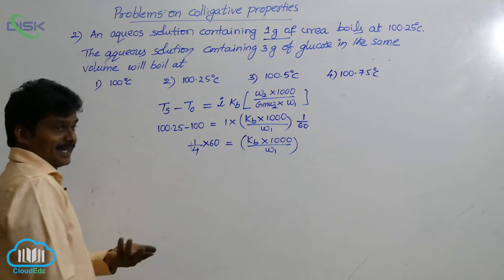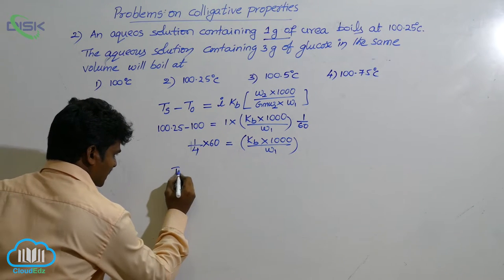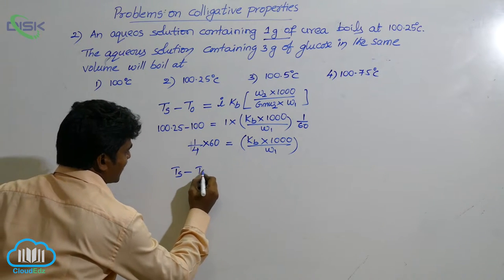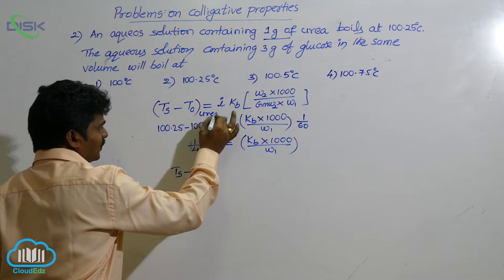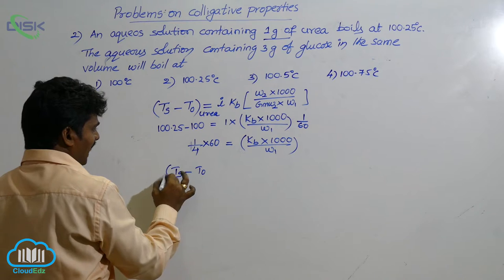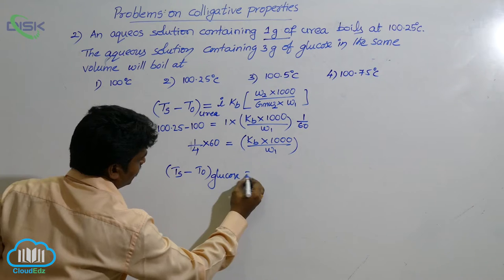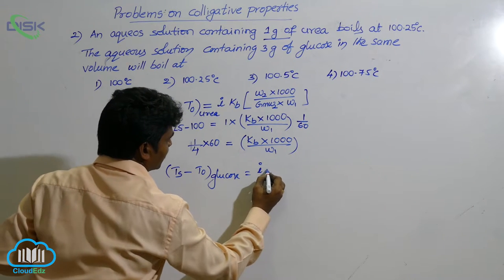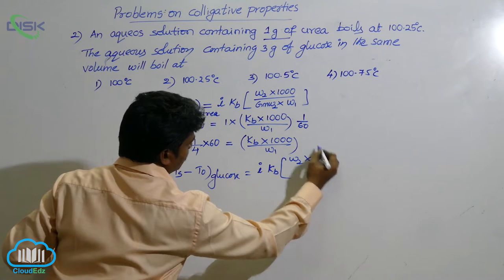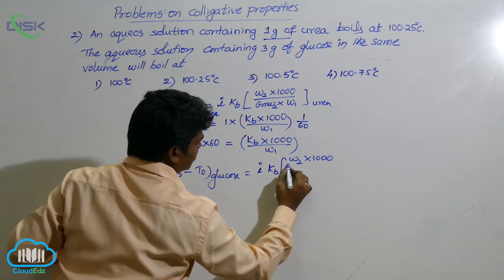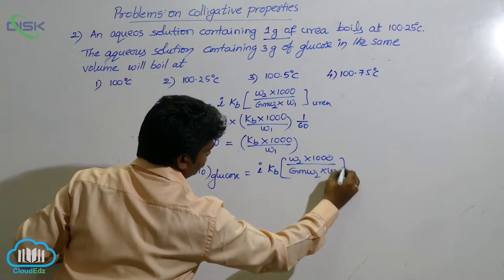Now let us write another expression, another formula for the second solution. So once again write the above formula: Ts minus T naught. This is for first solution, for which solution? This is for urea. Now we are writing the formula for glucose. So for this, Van't Hoff factor i into KB into formula W2 into 1000 by gram molecular weight of solute into W1 for glucose.